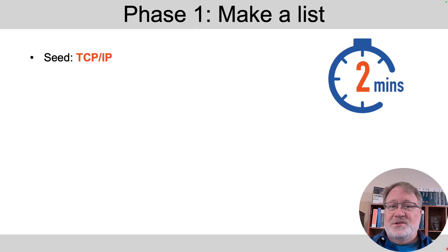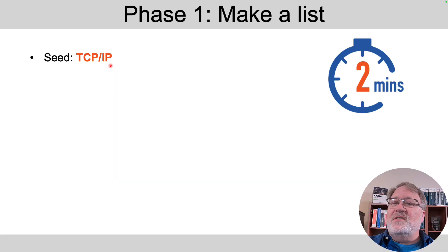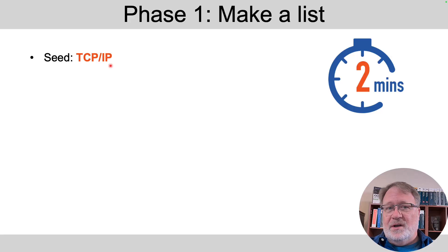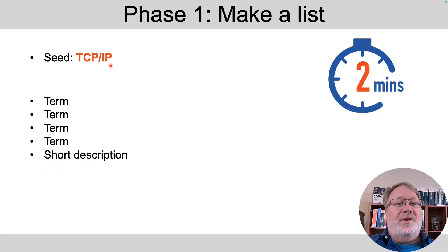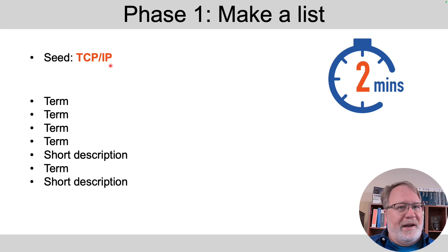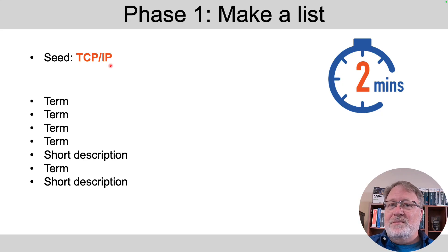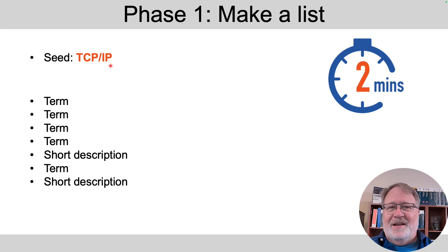Here's the phase one job. You start with the seed term TCP/IP, and think of all the terms you remember from watching those three videos related to chapter one. When you think of a term, write down the term. When you think of an idea but not a term, write down a description of the idea and just make a list. Two minutes, maybe three at the most — it's for a whole chapter's worth of content, so there might be more terms. Hit the pause button and go do that right now.